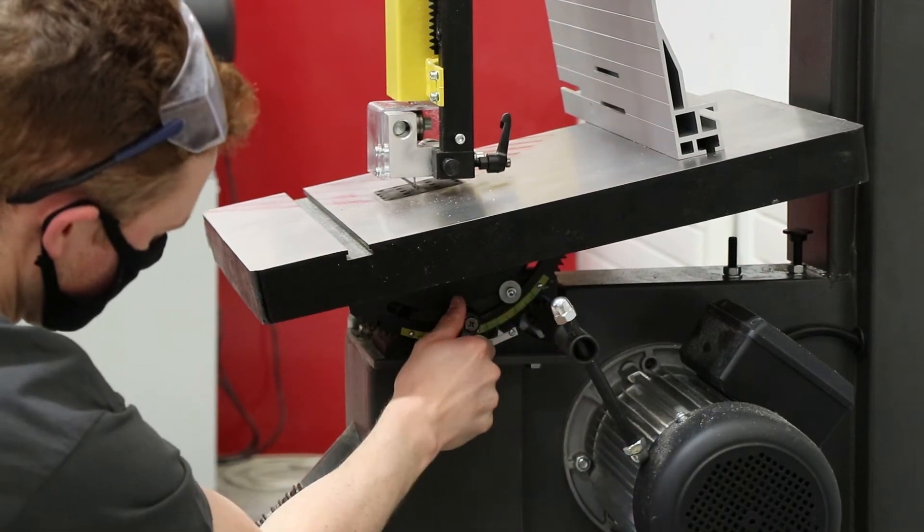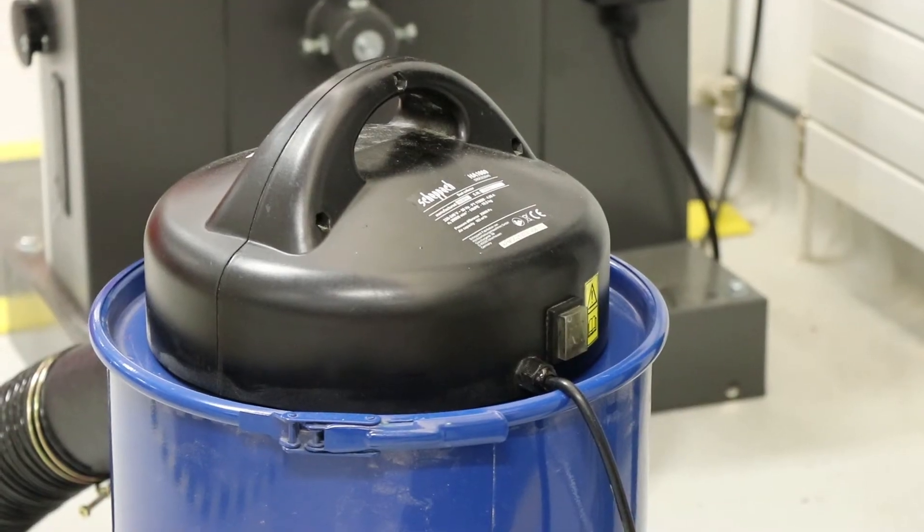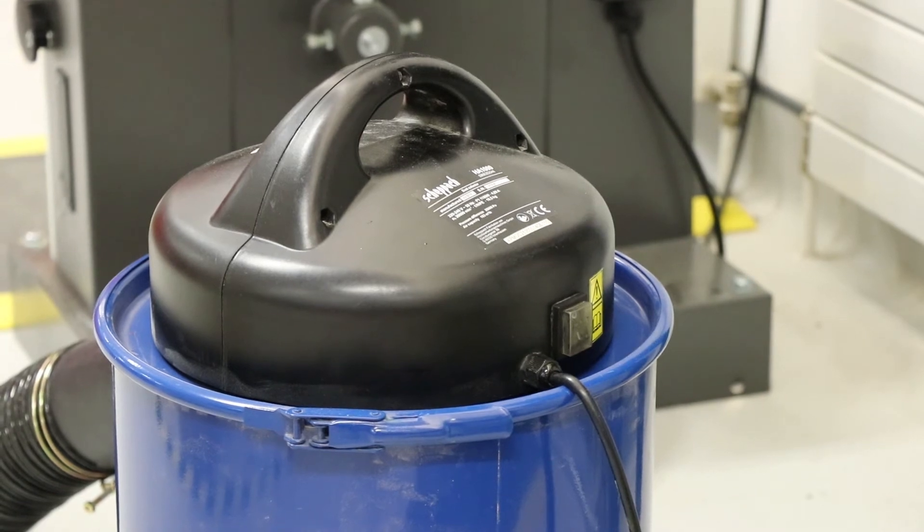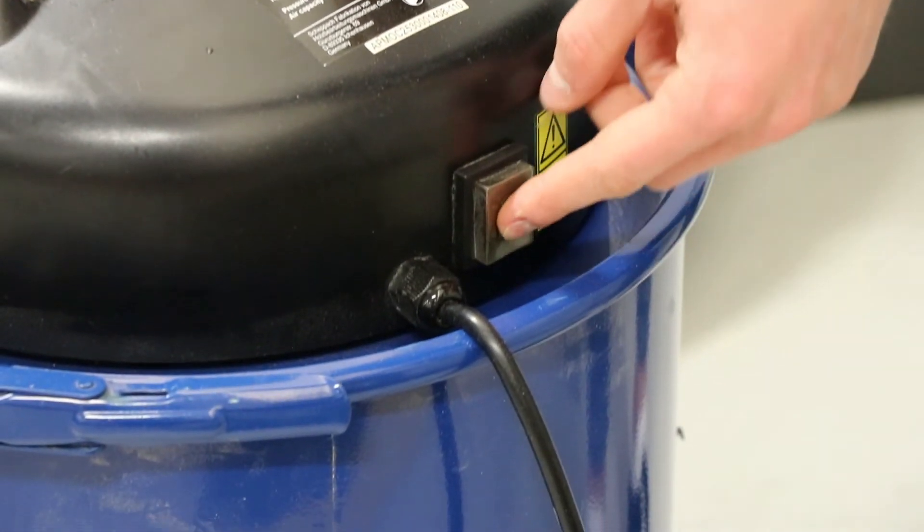A dust extraction unit is located next to the bandsaw. This must be turned on when operating the machine as wood and plastic dust can cause health issues when inhaled.